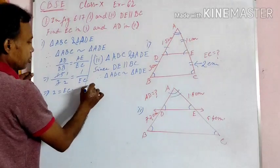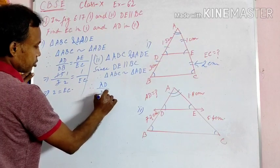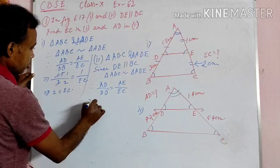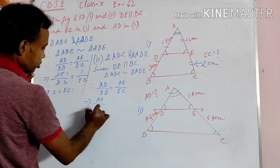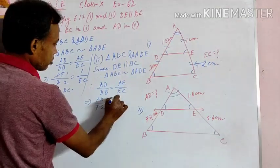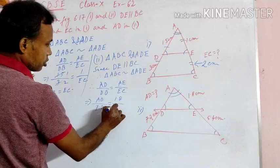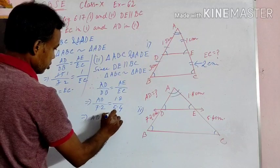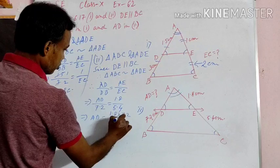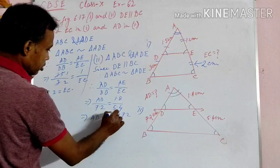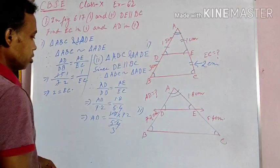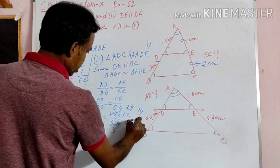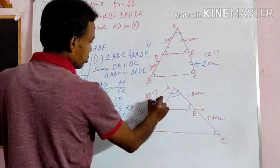Since two triangles are similar, we can write AD by DB equals AE by EC. Now just put the values: AD is to be found, DB equals 7.2, AE equals 1.8, EC equals 5.4. So AD equals 1.8 into 7.2 divided by 5.4, which gives AD equals 2.4 centimetres.